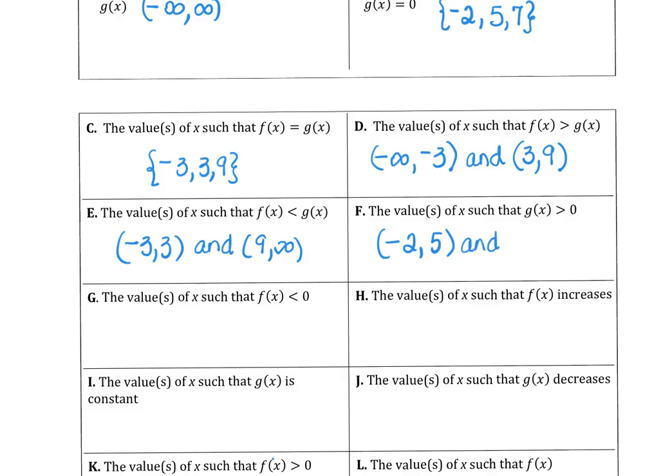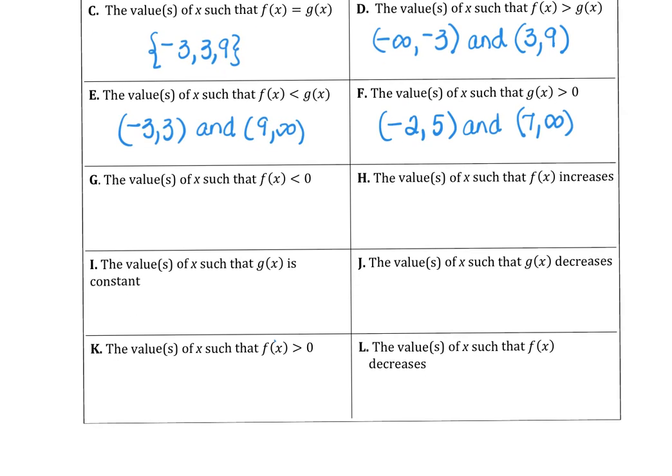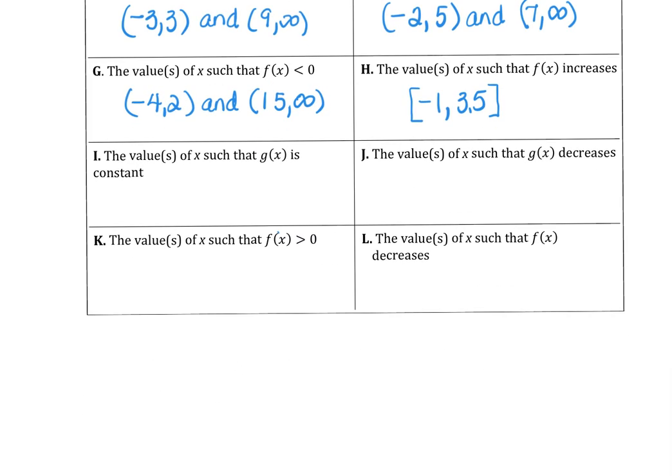On part g, the values of x, where f is less than 0 or below the x-axis, would happen at negative 4 to 2. That's the first interval. And then again, from 15 to infinity. That's a bad-looking 5 there, 15 to infinity. The values of x, where f of x increases, is from negative 1 to 3 and a half. And again, depending on what your teacher prefers, I prefer increasing to be on closed intervals. If your teacher likes open intervals, we'll stick with that as well. So it just depends on your teacher's preference. College Board won't penalize us for those intervals.